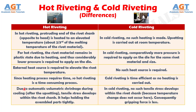Number 5: in hot riveting, due to automatic volumetric shrinkage during cooling after upsetting, tensile stress develops within the rivet shank, which helps hold the assembled parts tightly. Whereas in cold riveting, no such tensile stress develops within the rivet shank because no temperature change occurs. Consequently, the gripping force is less.